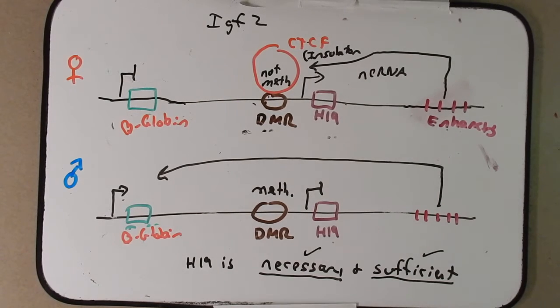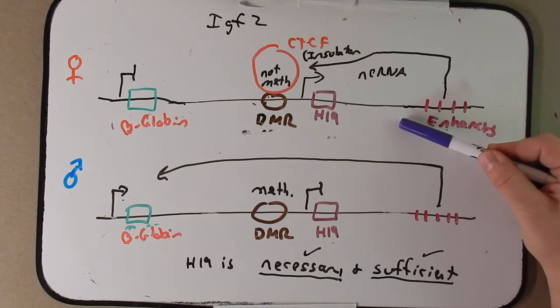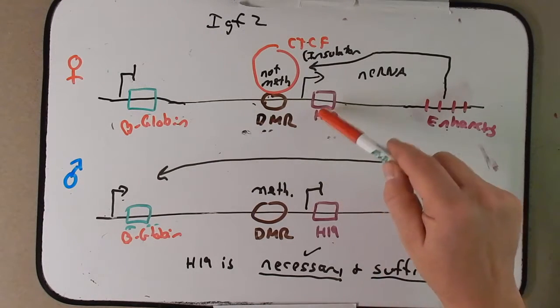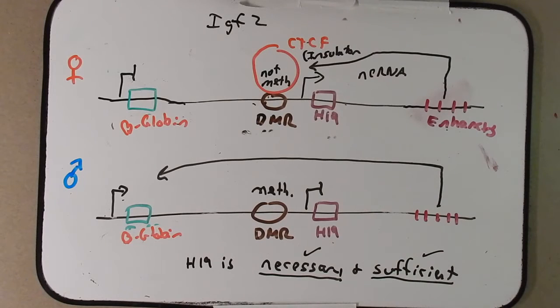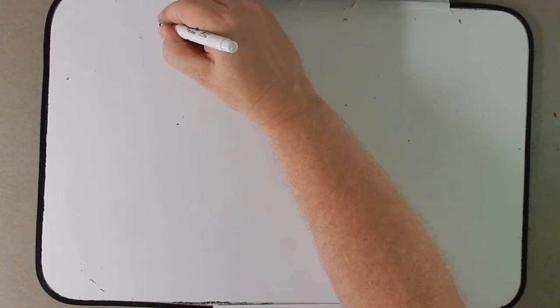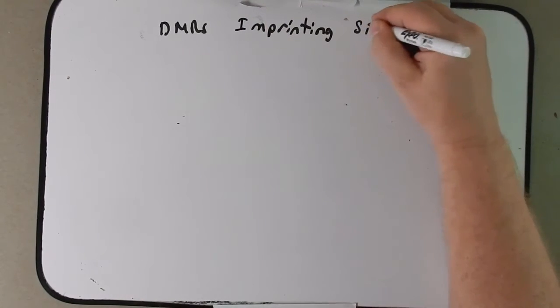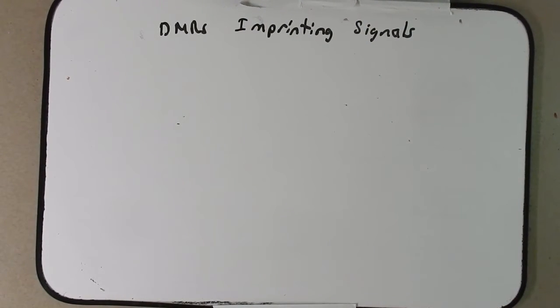Now the question is, how does H19 and the DMR regions here, how does it know to behave one way in the maternal source and the other way in the paternal source? And the short answer is we don't really know yet. We're still trying to figure this out. But let's talk just a little bit about what the signals here could be that are saying to either imprint or not imprint depending on its source. So what we're going to talk about here are DMRs, imprinting signals. What is in that DMR that's associated with specific non-coding RNA?